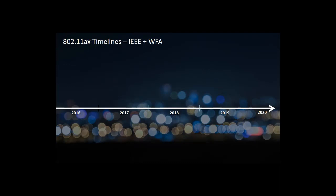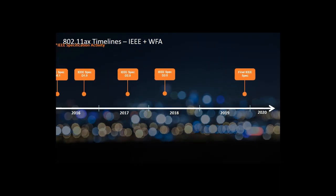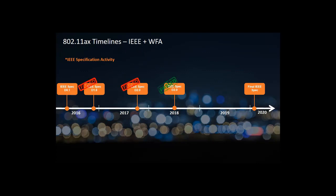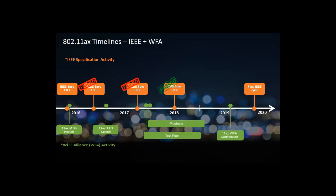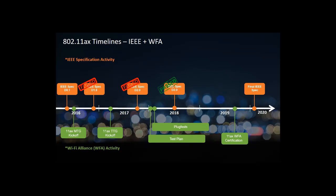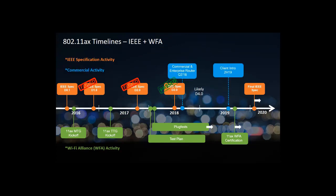Let's take a brief look at the IEEE, Wi-Fi Alliance, and commercial activities. Here we see the 11ax timelines for the IEEE specification activity, the Wi-Fi Alliance activity, and some of the commercial activity. The Wi-Fi Alliance certification is expected in mid to late 2019. 802.11ax is due to be publicly ratified and released sometime in late 2019 or early 2020. Devices were presented at CES 2018 showing a top speed of 11 gigabits per second. In October 2018, the Wi-Fi Alliance introduced a new consumer-friendly naming convention: 11ax is now referred to as Wi-Fi 6, and 11ac is now referred to as Wi-Fi 5.